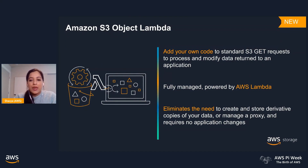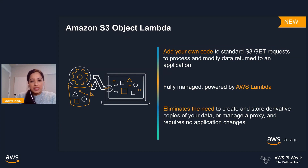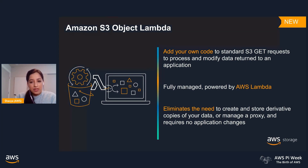S3 Object Lambda allows you to add your own code to process data that is retrieved from S3 before returning it to an application. For the first time, you can now use custom code to modify the data returned by standard S3 GET requests. You can use this to filter certain rows out of your objects, dynamically resize them, redact or mask confidential information, or otherwise modify data being returned by S3. All requests and data processing run on AWS Lambda infrastructure, meaning it is fully managed by AWS. Your custom code executes on demand, eliminating the need to create and store derivative copies of your data, and it requires no changes to your applications.